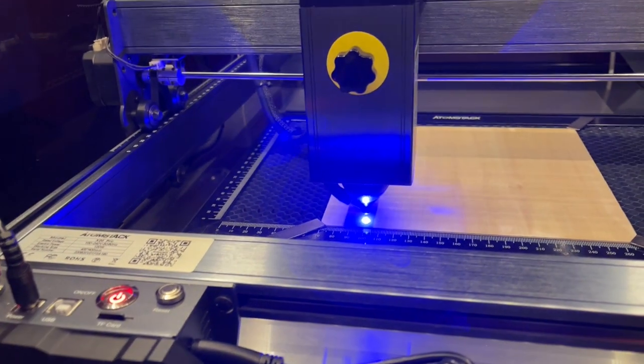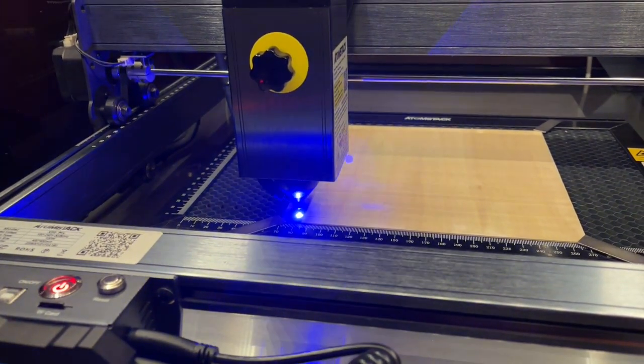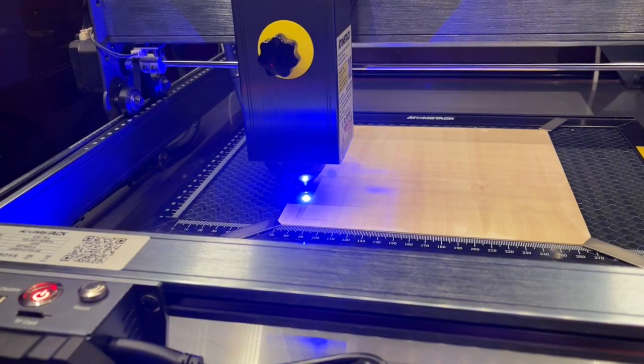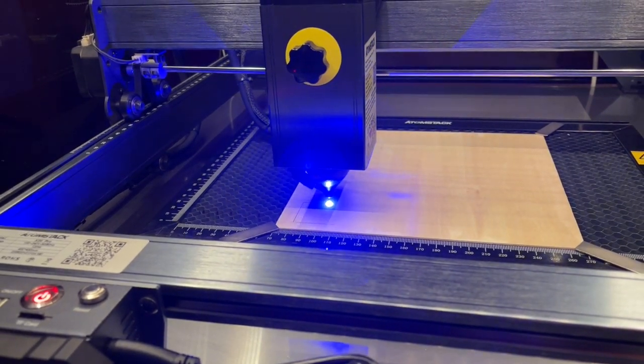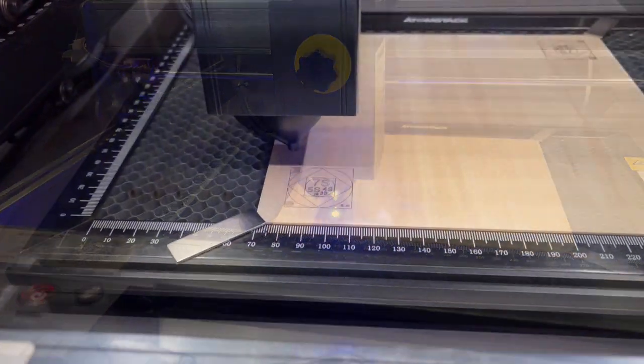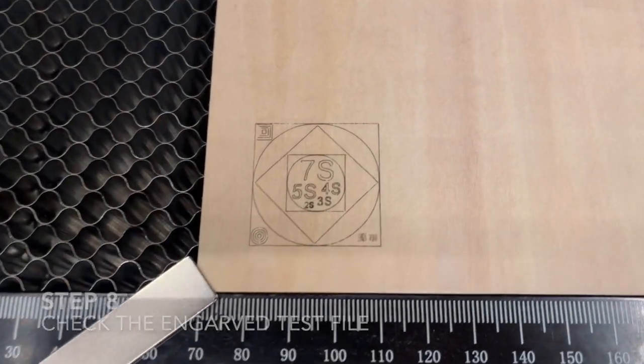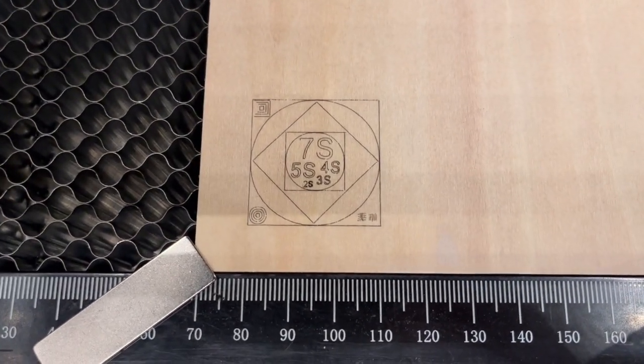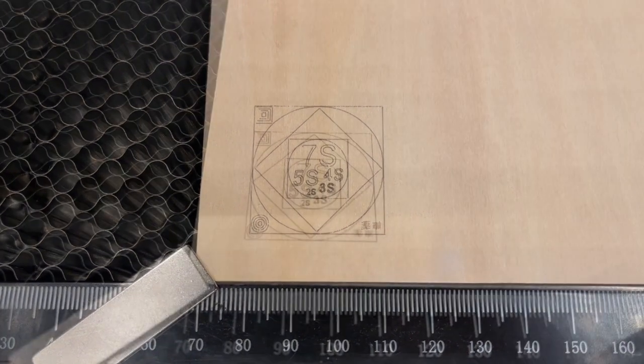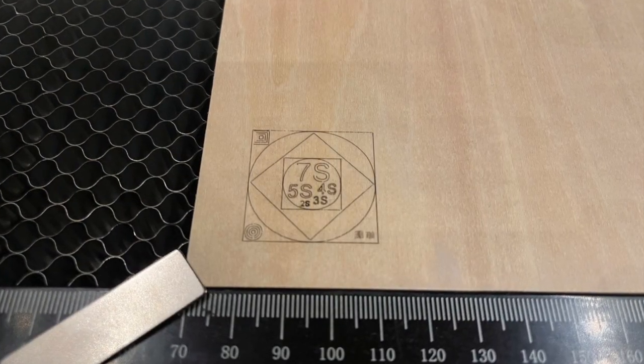After the engraving is done, we go and have a closer look at the results. As you can see, all the lines and circles, and also the curves, have been engraved nicely and we are all good to go.